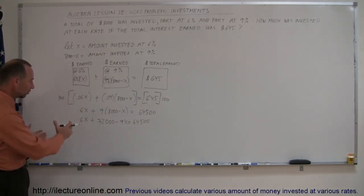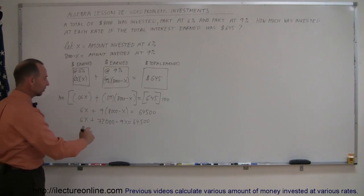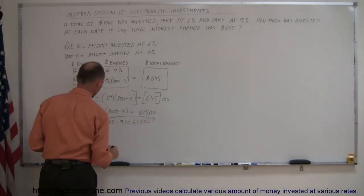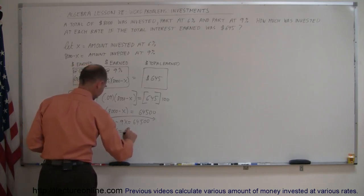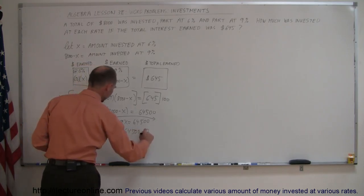Leaving all the terms with an X to the left side of the equation, moving the 72,000 to the right side of the equation, we get 6X minus 9X equals 64,500 minus 72,000.